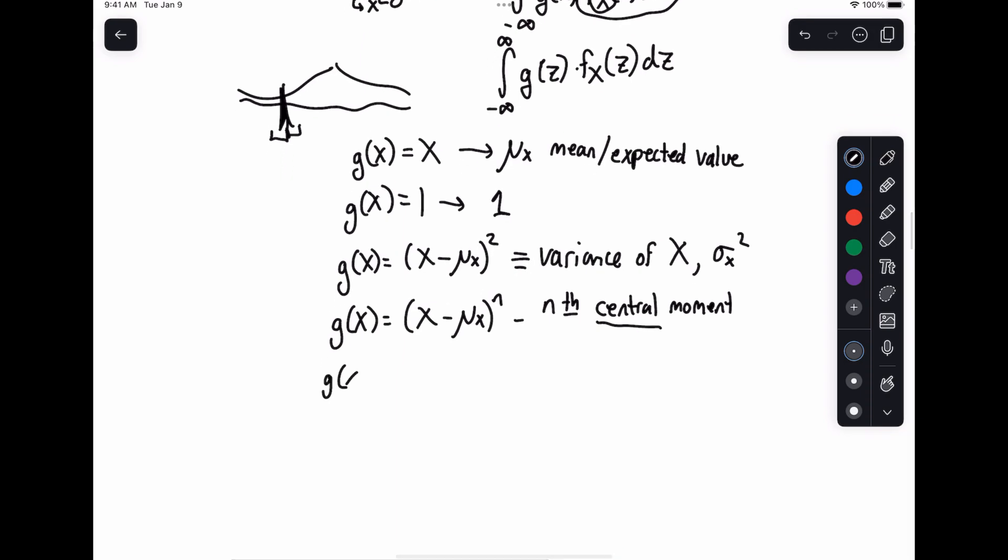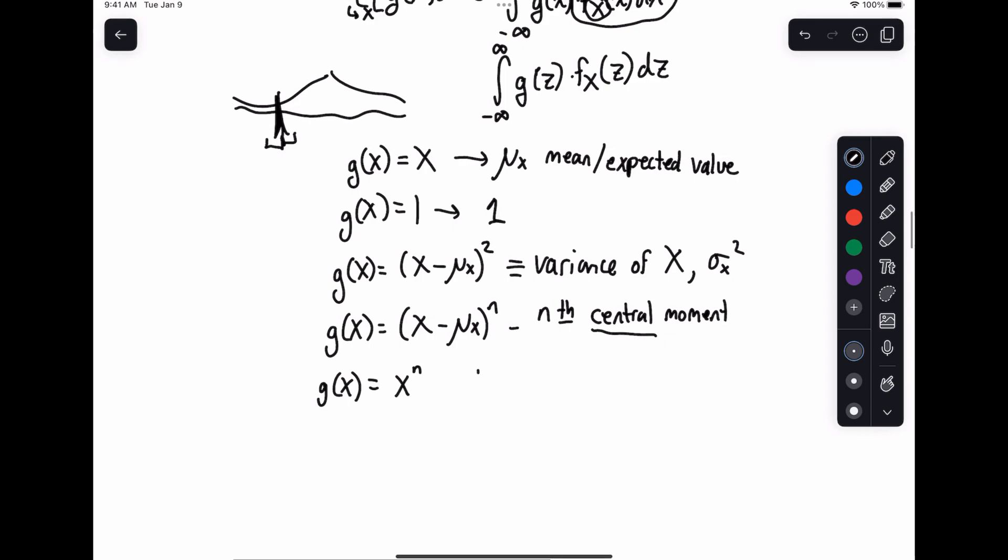And similarly, if g of x is simply equal to x to the n, what we get is the nth moment, not the central moment, just the nth moment itself. Now, it's important here to realize that often the central moment is a more useful thing than the moment. What we'll talk about often is centering a random variable, which is removing its mean or subtracting its mean. So in that case, of course, if the mean is zero, then the central moment and the moment or the nth central moment and the nth moment itself are going to be the same.